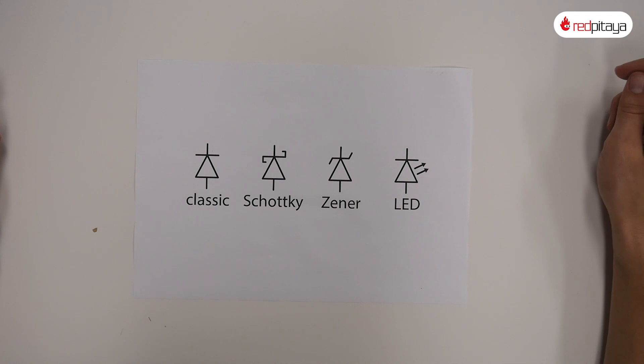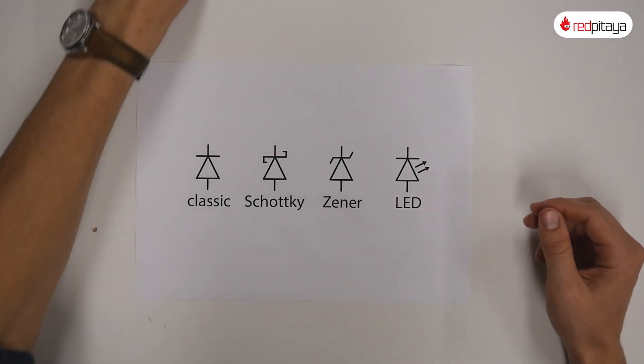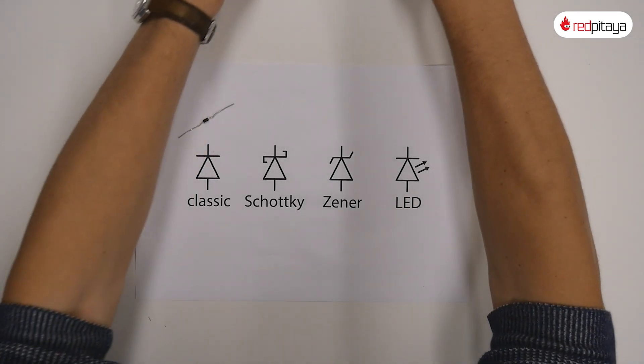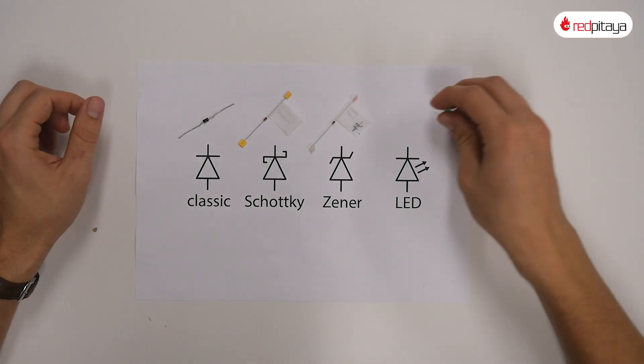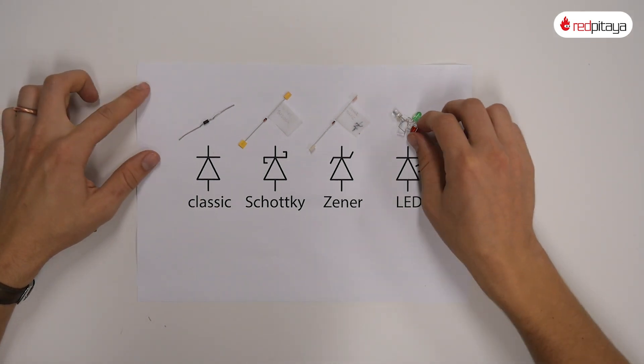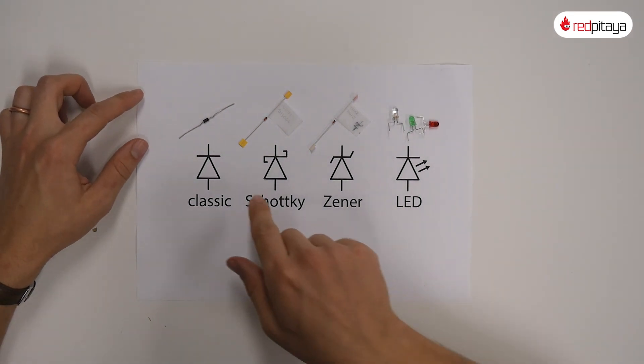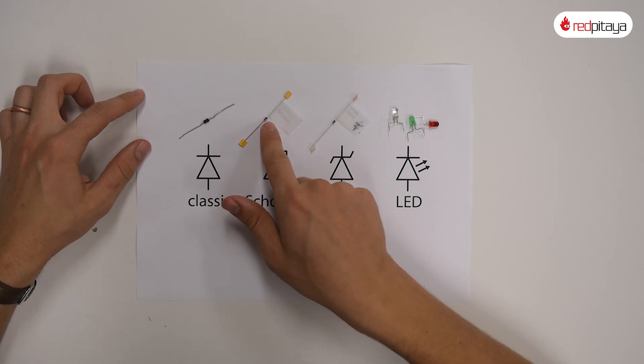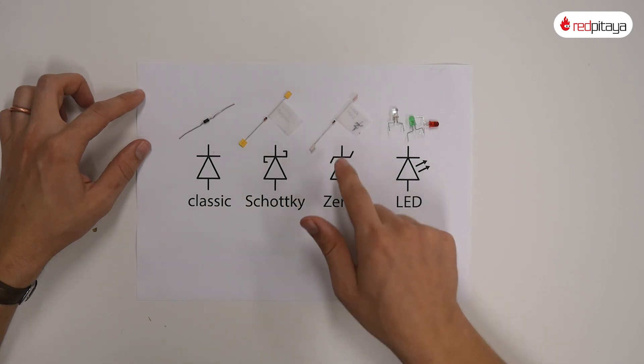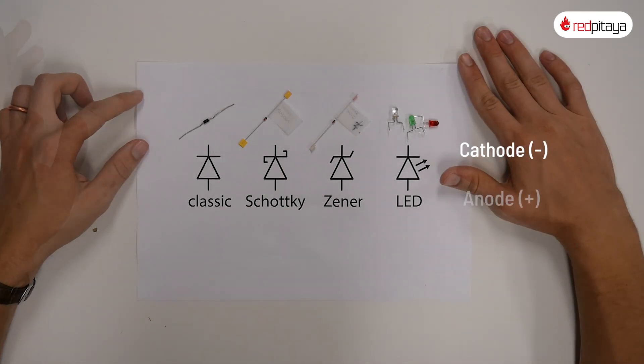Aside from having different symbols, diodes also come in a wide variety of packages. This doesn't mean that specific diodes have specific packages, though LEDs can usually be recognized by their package. Diodes usually have a straight line somewhere on the package. This straight line corresponds to the line seen in the electrical symbol. This node is known as the cathode or the negative end. The positive end is called anode.